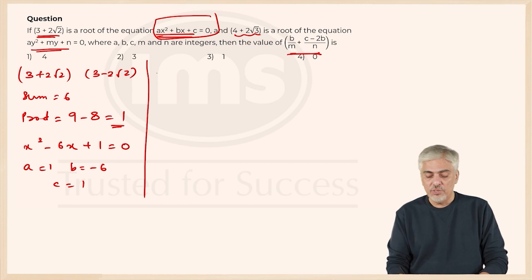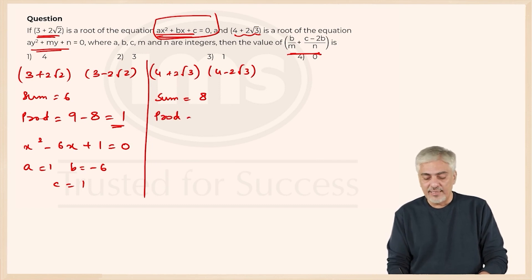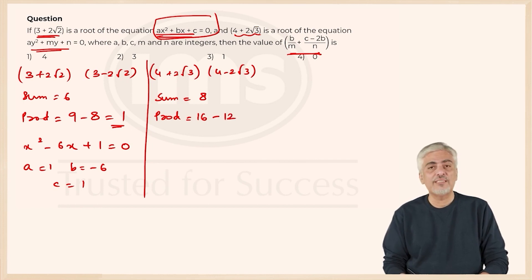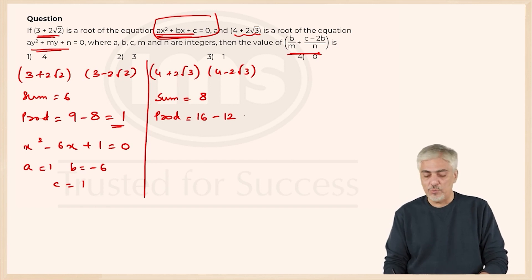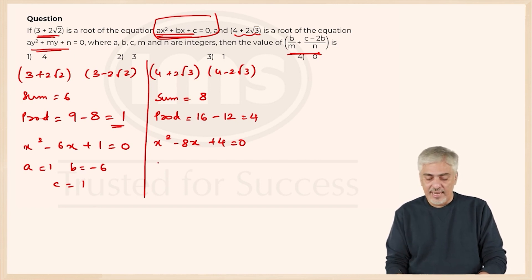Now let's do exactly the same thing for the second equation. Four plus two root three gives the other root as four minus two root three. The sum will be eight, since the two root three terms cancel. The product will be 16 minus 12 — using (a+b)(a-b) = a² - b², so 16 minus (two root three)² = 16 minus 12 = 4. So the equation is x² - 8x + 4 = 0, giving m = -8 and n = 4.